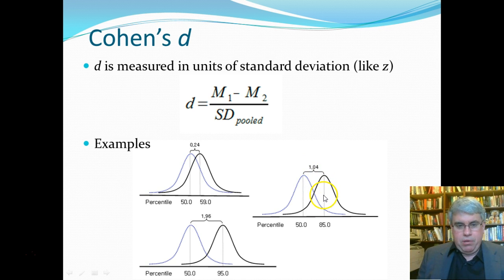Here would be a d of 1.04, and a huge d of 1.96 would look like this, where almost everybody in the black group does better than most everybody in the blue group. That's a lot more common to have effects like this when you do training. You don't turn people into superstars by giving them training, you help them get a little bit better. So that's the second measure of effect size, Cohen's d, which is measured in units of standard deviation.